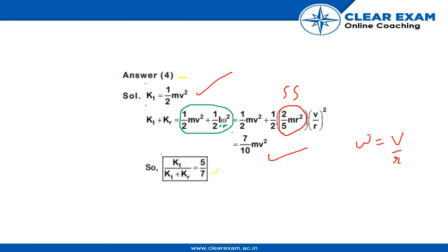So, putting upon in ratio we get 5 to 7 which is option 4. So, I hope everybody got it. Thank you.